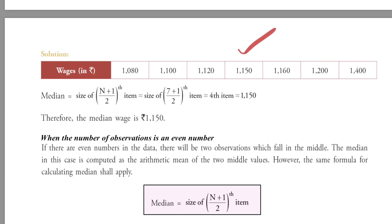In the example, we have to compute the wages of the workers. There are seven observations. To compute the median, we have to apply the formula that is n plus 1 upon 2 item, here n is equal to 7.